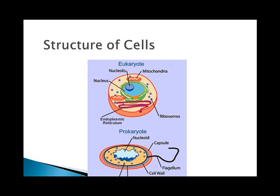As a reminder, eukaryotic cells have definite membrane-bound nuclei as well as membrane-bound organelles, and they are larger in size than prokaryotic cells.